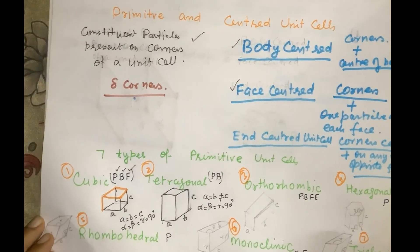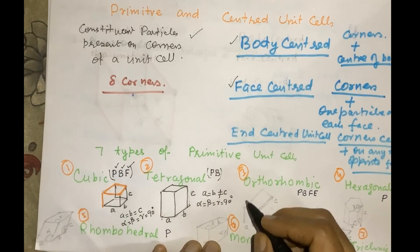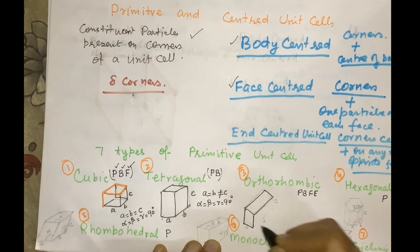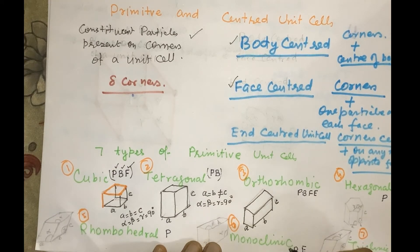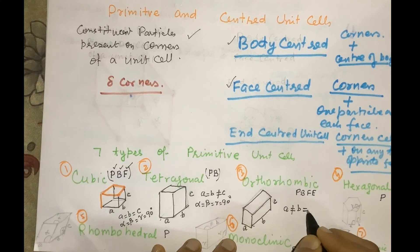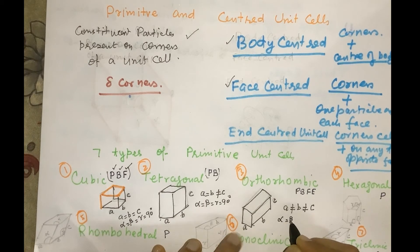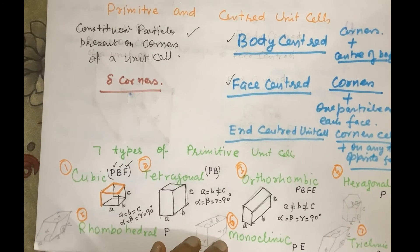In orthorhombic, the structure has edges A, B, and C where A is not equal to B and they are not equal to C — all edges are different lengths. However, alpha equals beta equals gamma and they are all equal to 90 degrees. Orthorhombic is possible in all four forms: primitive, body-centered, face-centered, and end-centered.